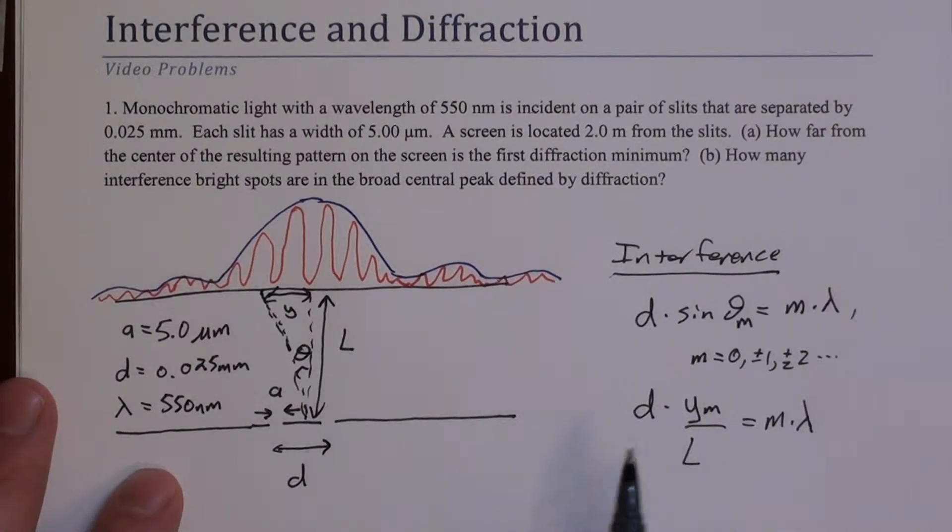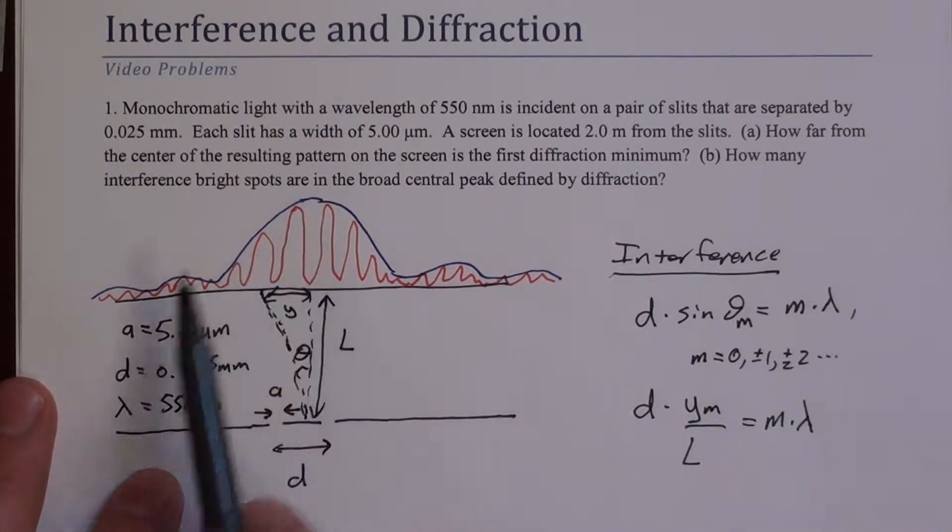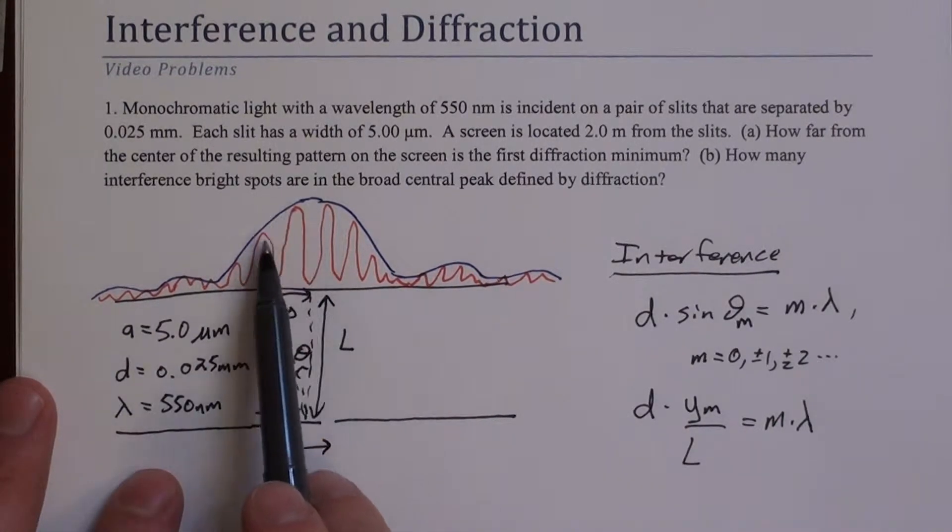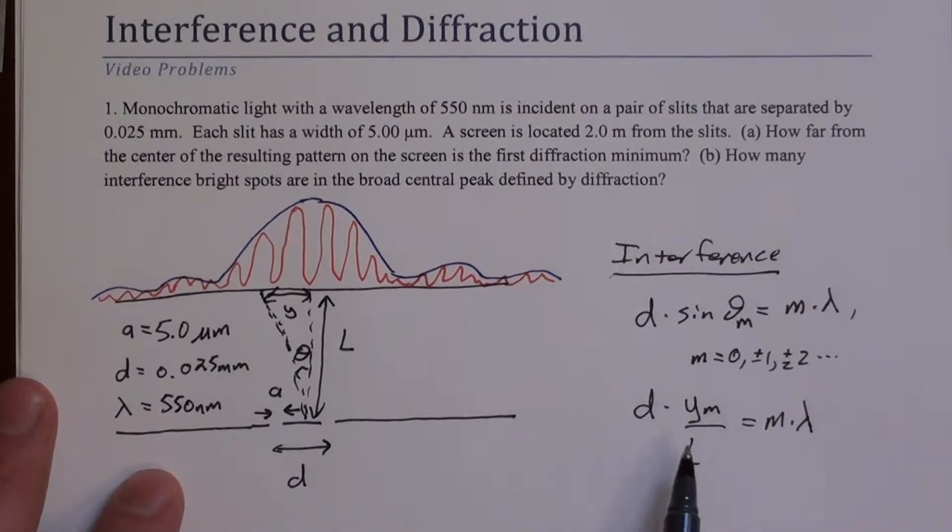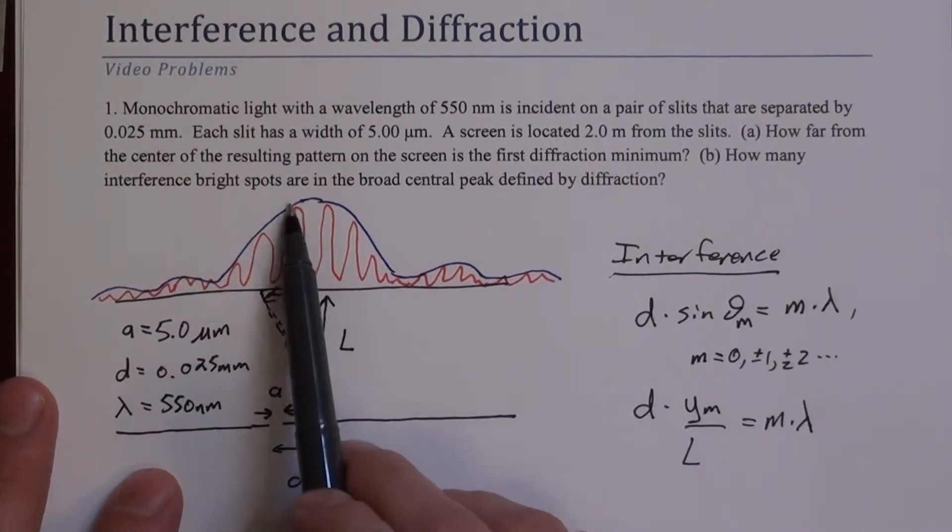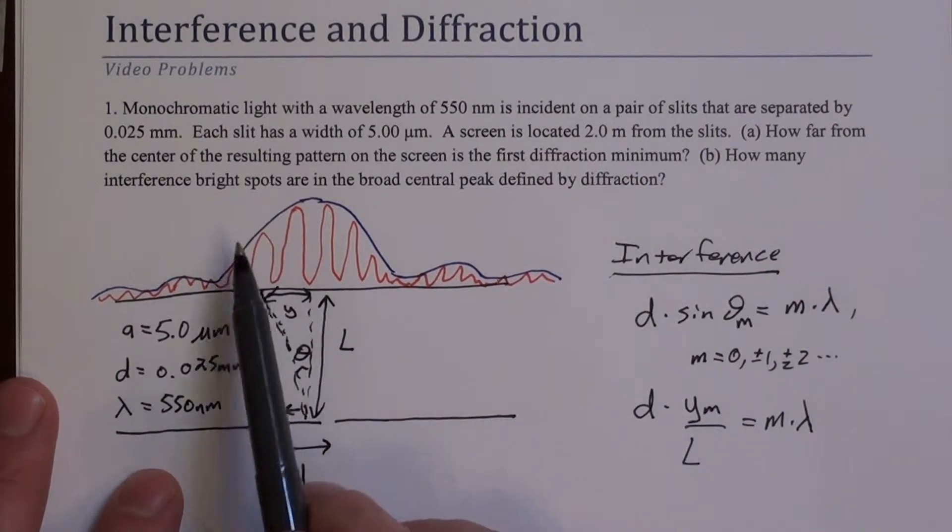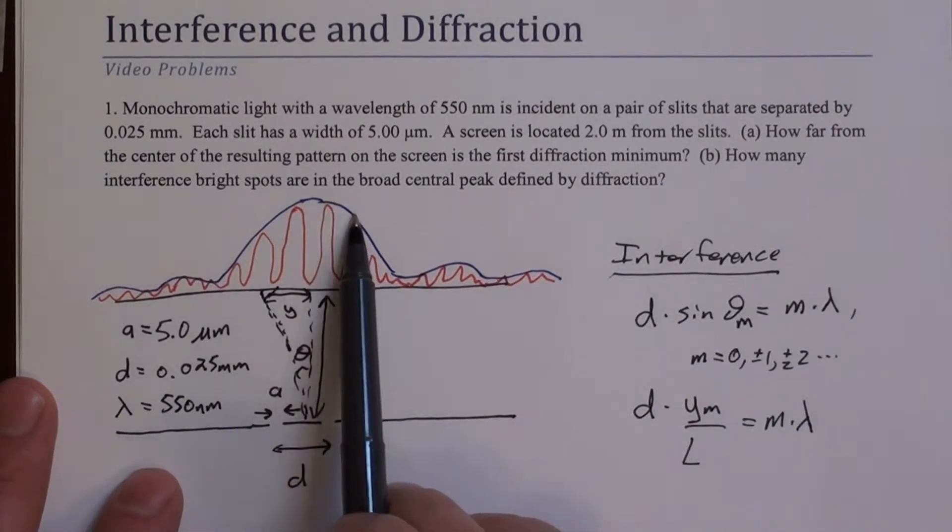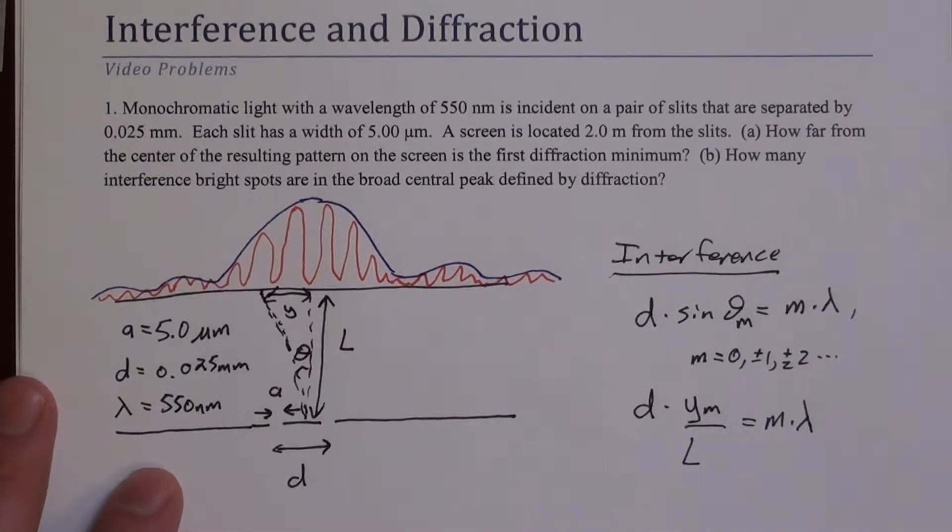The subscript M is just to say there are a bunch of peaks, right? There's a peak here, here, here, here. So those correspond to various M values. M equals 0 is the center, M equals 1 goes out 1, 2, 3, 4, and the minuses just go the other direction. So minus 1, minus 2, minus 3, and so forth.